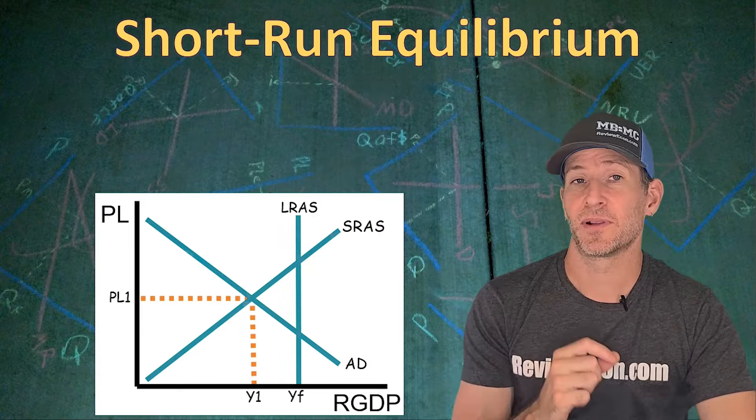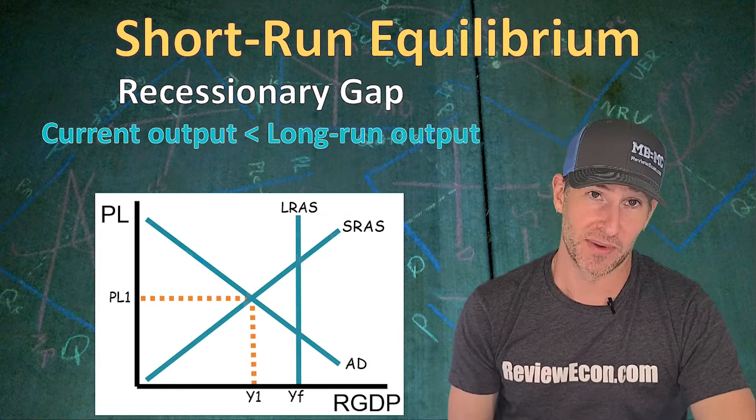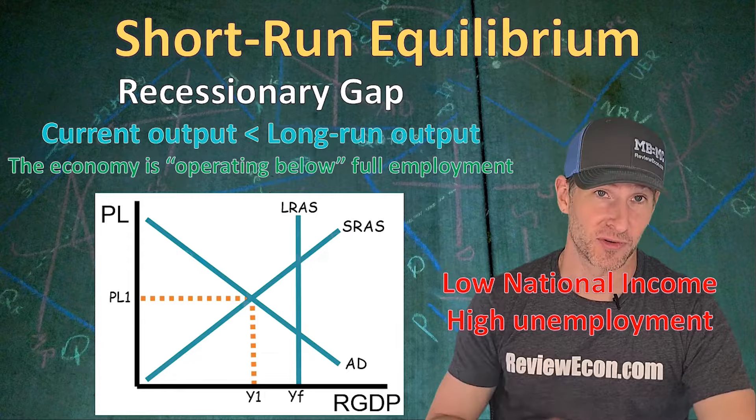If you draw in the long run aggregate supply curve on the other side of the short run equilibrium, then we are going to have a recessionary gap. There, the current output labeled Y1 is less than the full employment output. The economy is operating below full employment, our national income is lower than the long run potential, and our unemployment is higher than the natural rate.